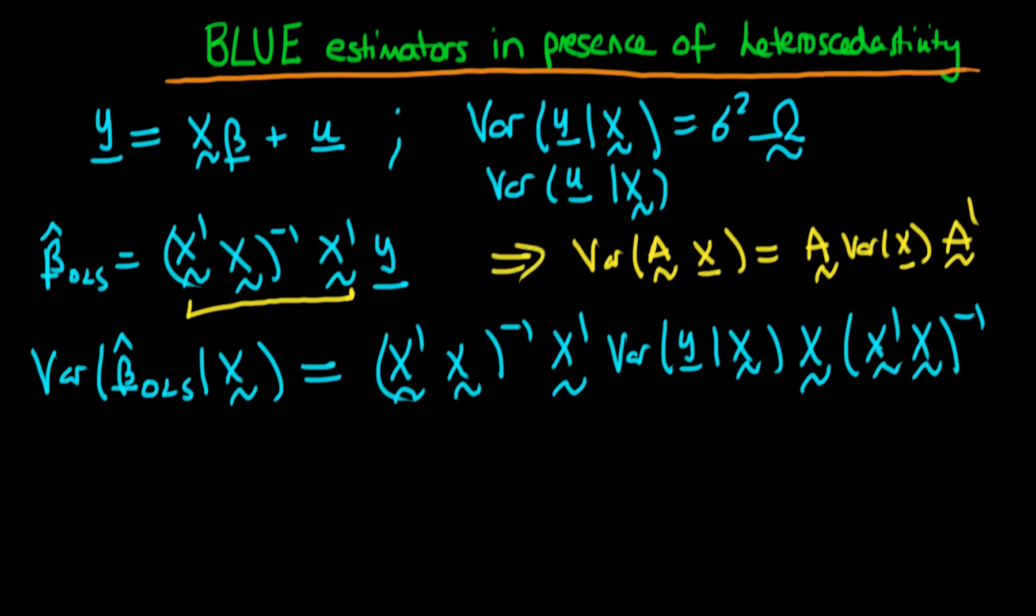So remember homoscedastic errors is if we replace this matrix omega by the identity matrix. So if we had homoscedasticity we can already write out what our form of our variance is.